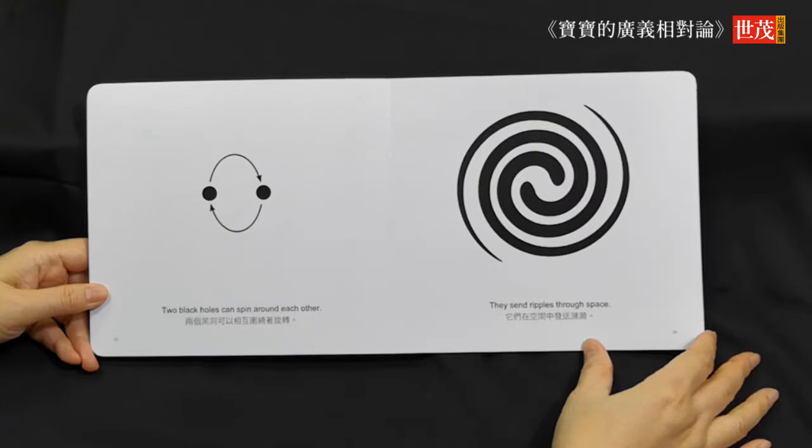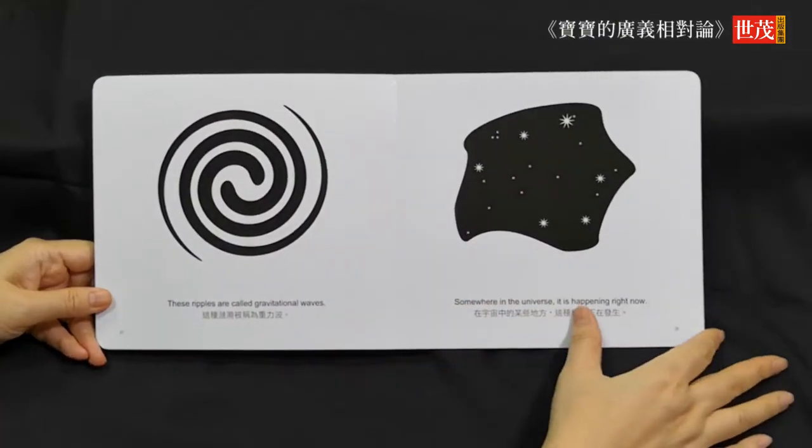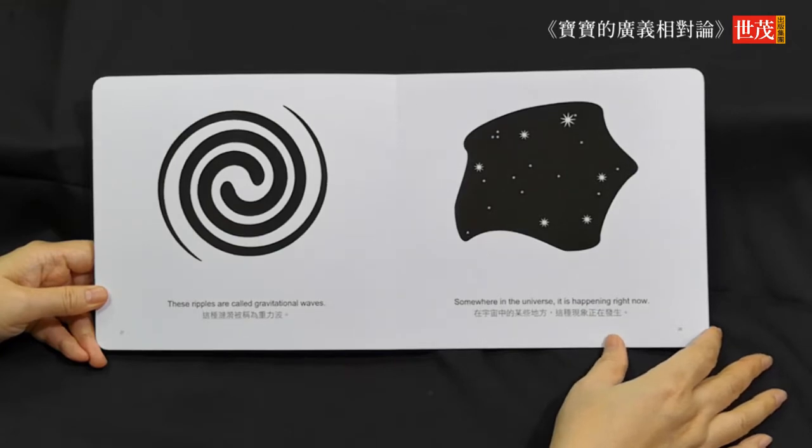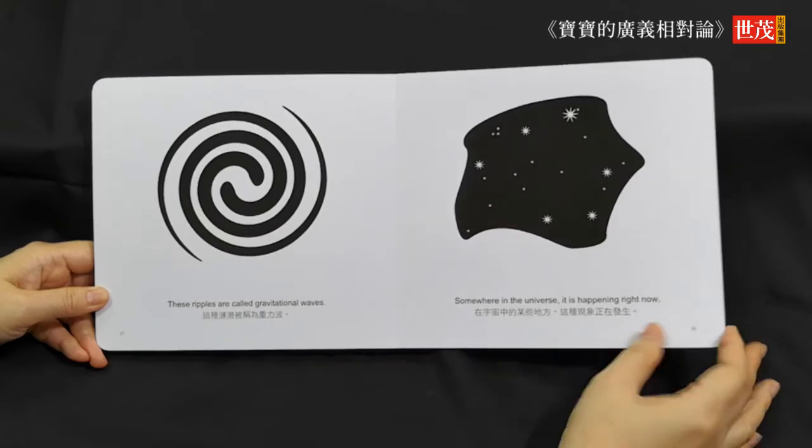Two black holes can spin around each other. They send ripples through space. These ripples are called gravitational waves. Somewhere in the universe, it is happening right now.